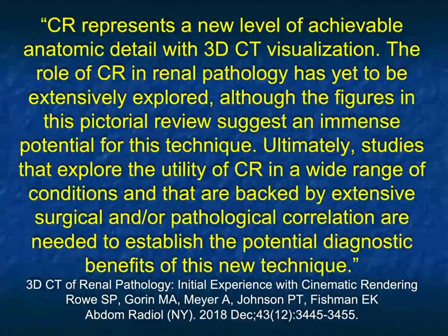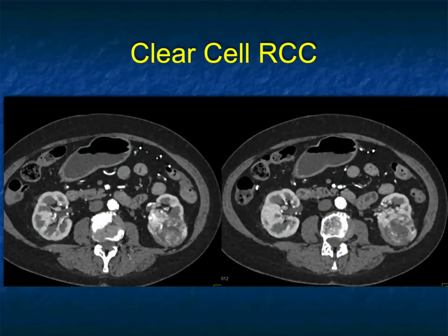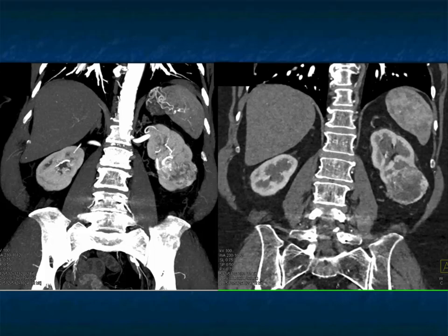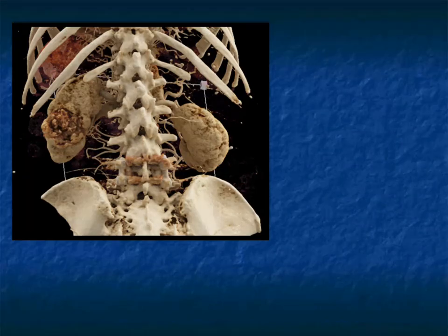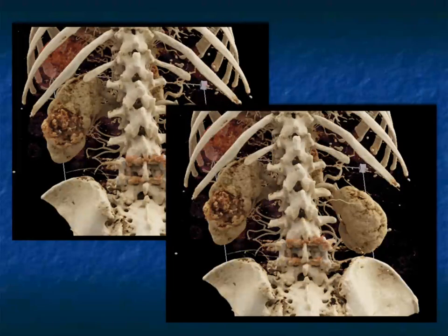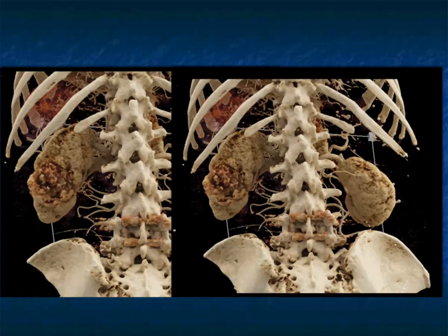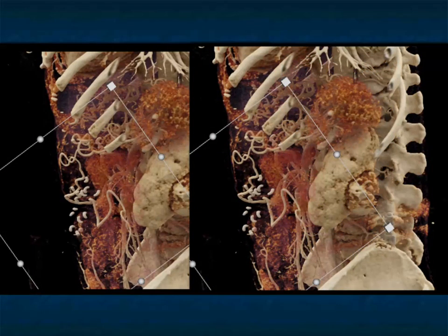We're continuing to do work on the kidney using cinematic rendering. Here's another vascular solid lesion in the left kidney with central necrosis and neovascularity — clear cell renal cell carcinoma. It's unusual to see this kind of vascularity in a papillary renal cell carcinoma or even a chromophobe tumor. Here it is on posterior view from cinematic rendering, used for preoperative planning — a partial nephrectomy was not done because the tumor was extending too far centrally. It's important to provide this information to the referring clinician.